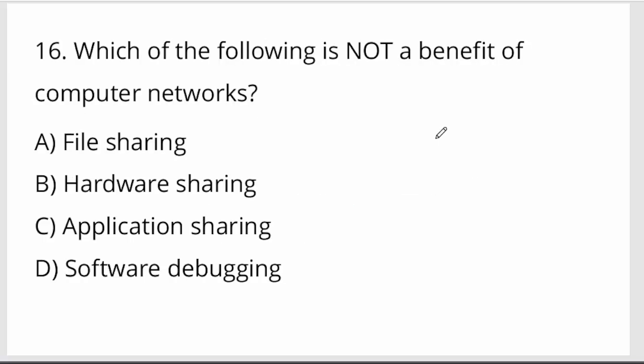Which of the following is not a benefit of a computer network? Not a benefit — software debugging. Benefits include application sharing, hardware sharing, and file sharing.